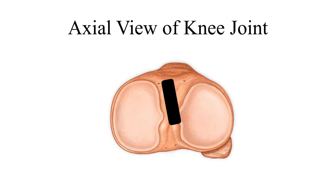Now coming to the axial view of the knee joint. This black structure is again the anterior cruciate ligament, and the structure shown is the upper end of the tibia with the medial and lateral tibial condyles. The anterior cruciate ligament extends from the anterior aspect of the tibial intercondylar eminence and attaches to the posterior aspect of the lateral femoral condyle.